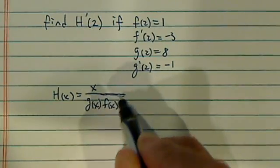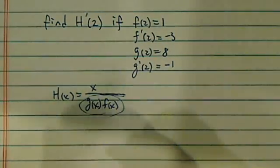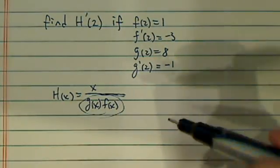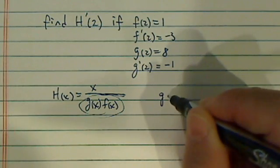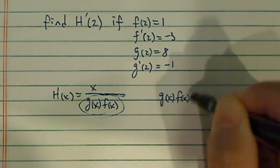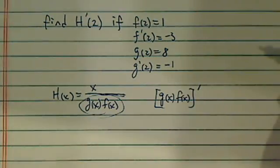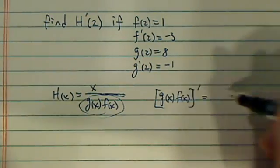Another thing that's not quite as obvious is when you take derivative of the bottom part, which quotient rule requires, we need to know what g(x)f(x), the whole thing, taking derivative. So let's take a minute to find this one first.